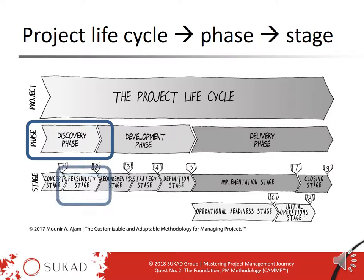We revisit the same standard model to highlight where the feasibility stage fits in this lifecycle. The feasibility stage starts after the approval of gate 1 and concludes with project authorization at gate 2.